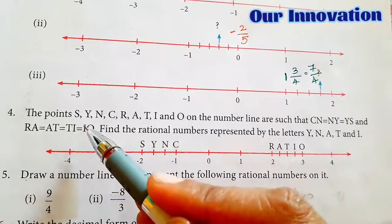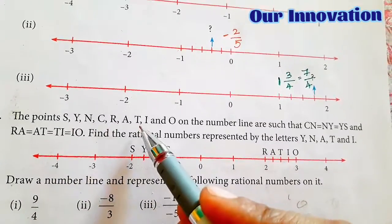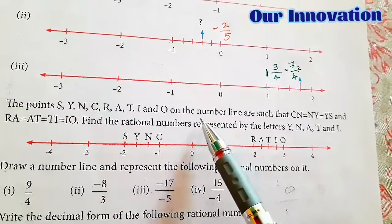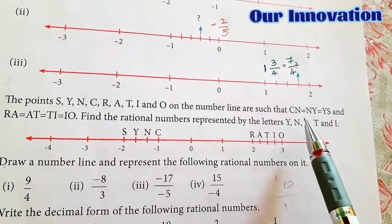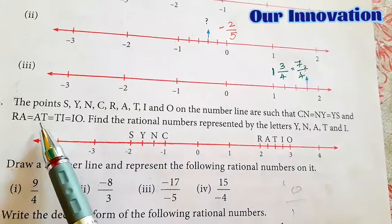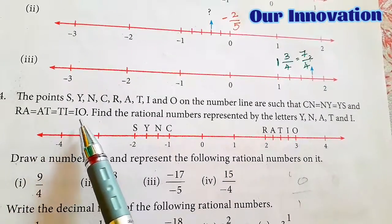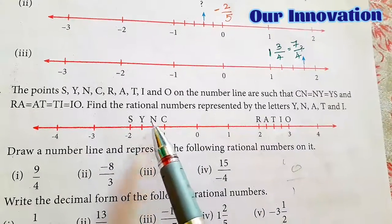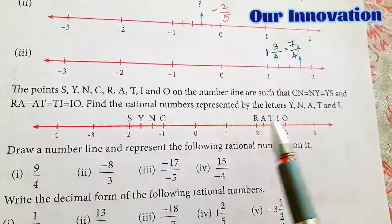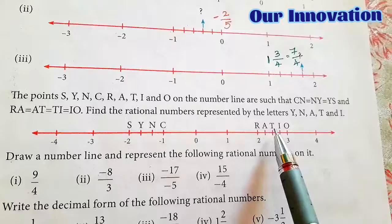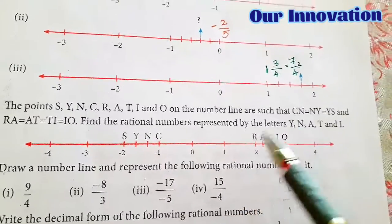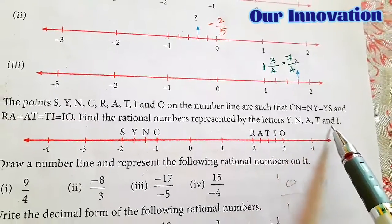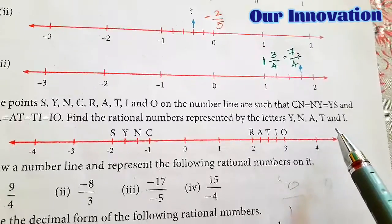Fourth one: the points S, Y, N, C, R, A, T, I, O on the number line such that CN = NY = YS and RA = AT = TI = IO. All of these are equal distances apart. So we need to find the rational numbers for Y, N, A, T, and I.